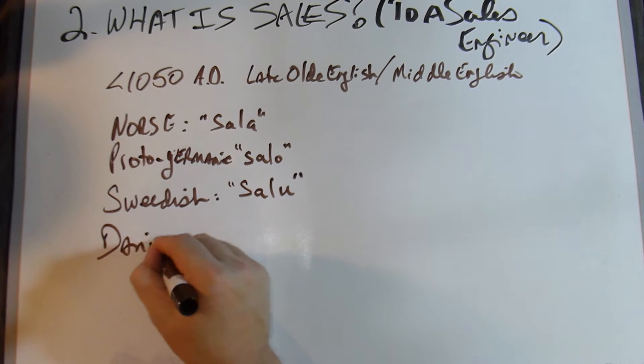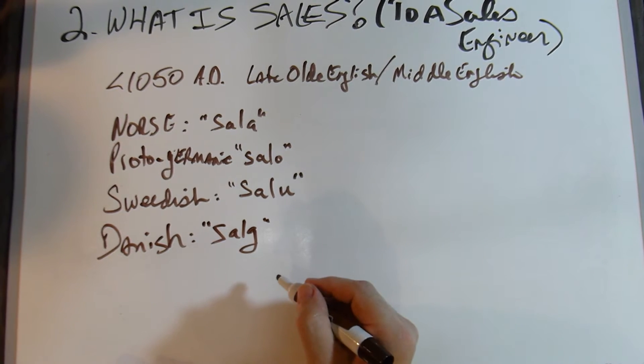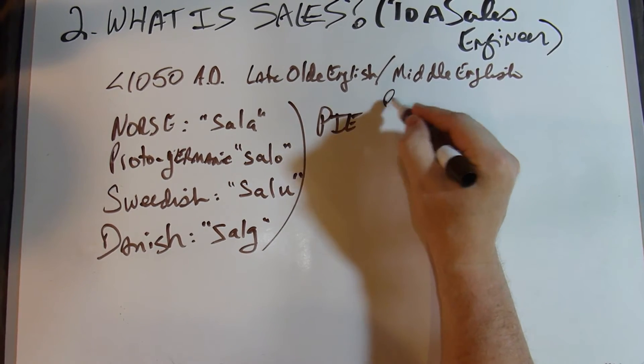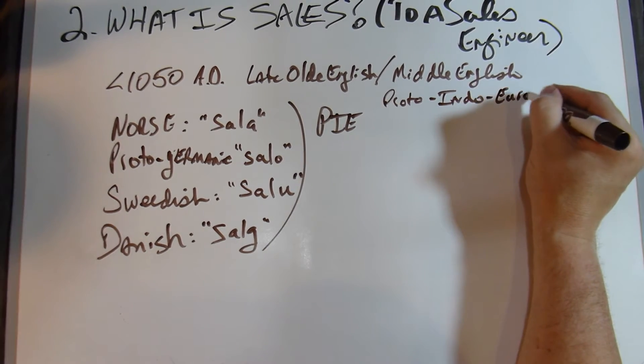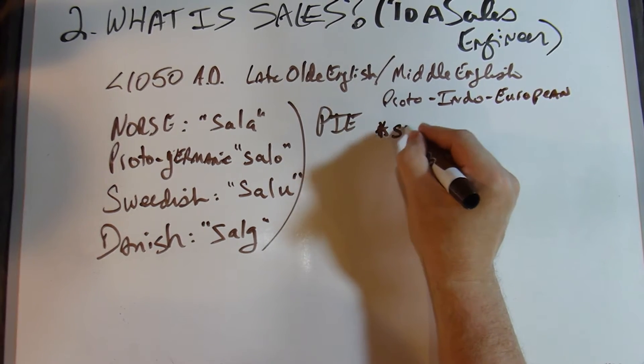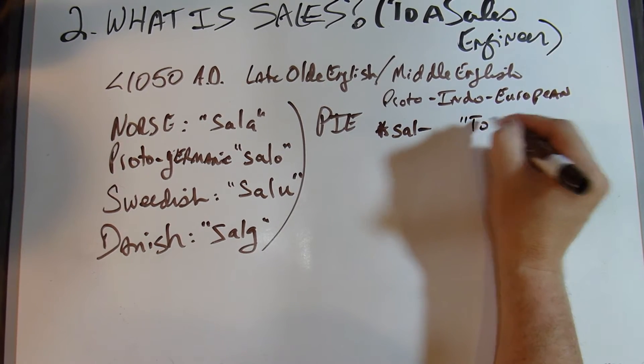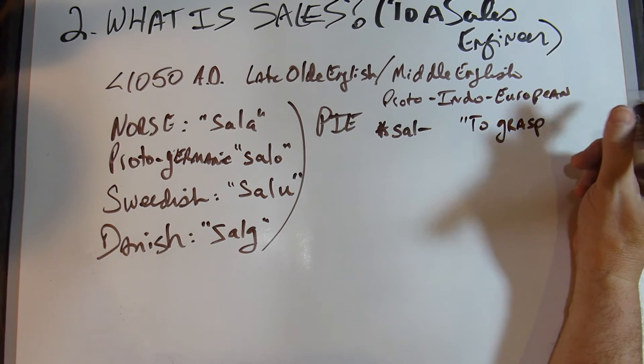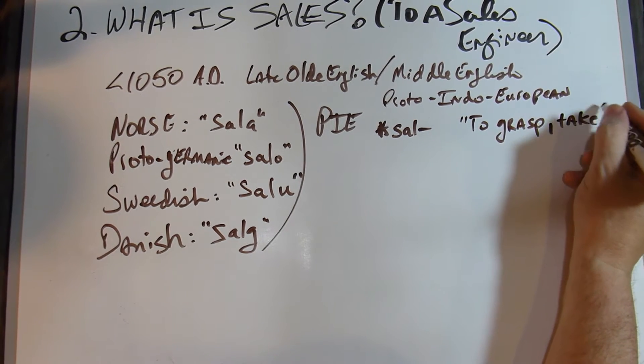In Danish, S-A-L-G. And interesting, the P-I-E, if you know, this is Proto-Indo-European. The root is S-A-L, the root for this word. This root means to grasp, or get, or to take. Interesting.